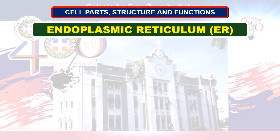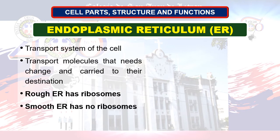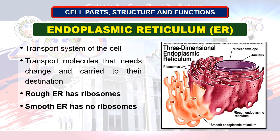Next organelle: endoplasmic reticulum. The endoplasmic reticulum is a system of membrane-enclosed canals forming a network in the cytoplasm. It serves as a route of transport for materials within the cell, and is also known as the transport system of the cell. There are two types: rough endoplasmic reticulum, which is lined on its outer surfaces by small particles called ribosomes, and smooth endoplasmic reticulum, which lacks ribosomes.